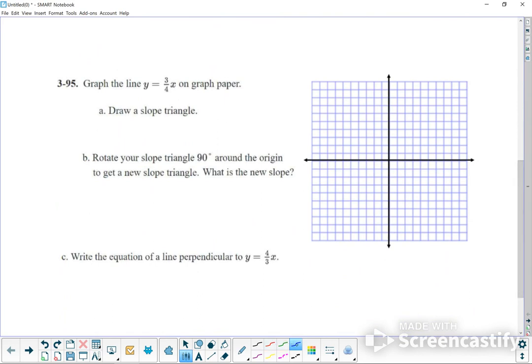So graph this line on the graph paper to the right. This line right here, number 95. This has a y-intercept of 0 and it has a slope of up 3 over 4. Keep doing that up 3 over 4. So it's going to look something like this. And it'll be down 3, left 4. Down 3, left 4.